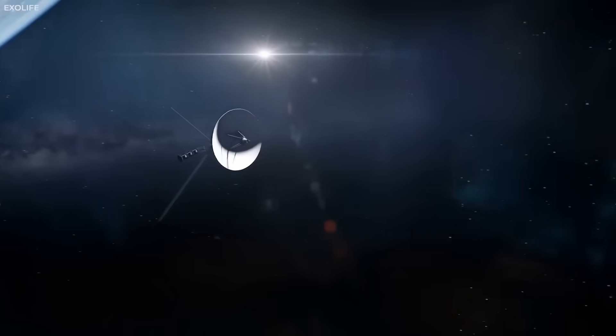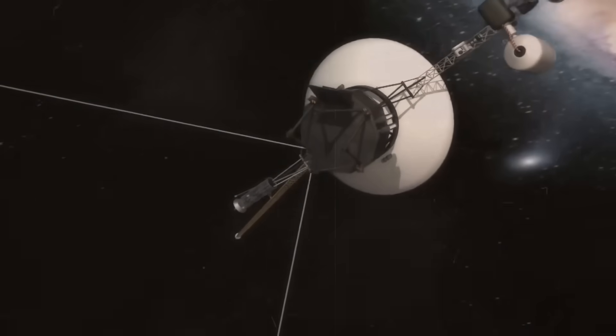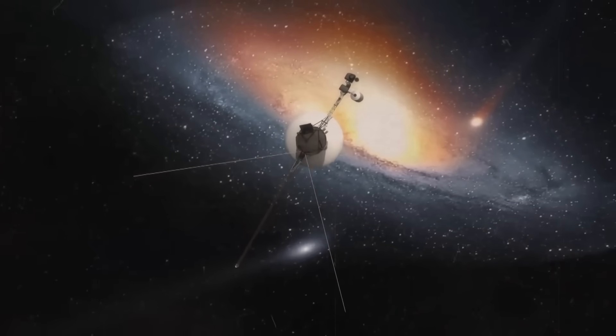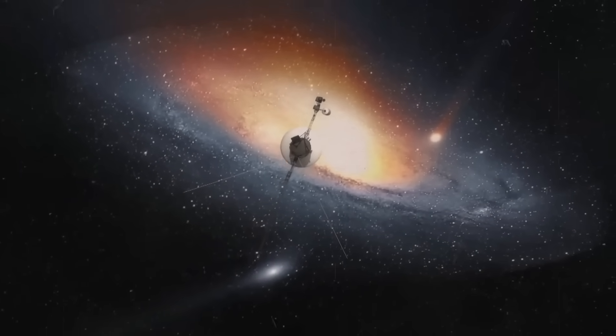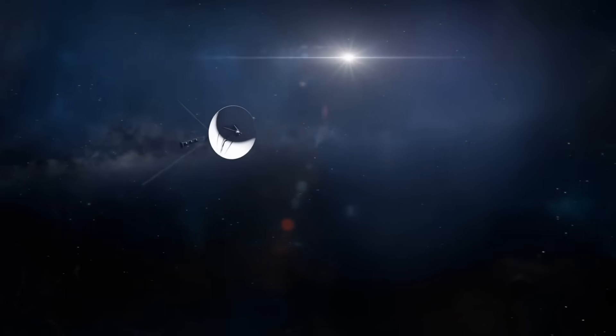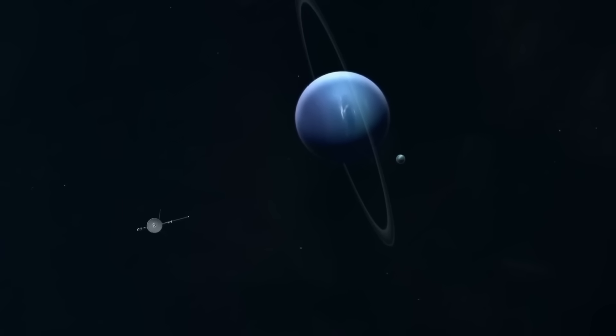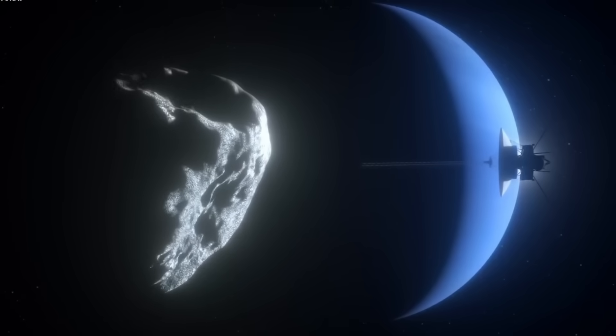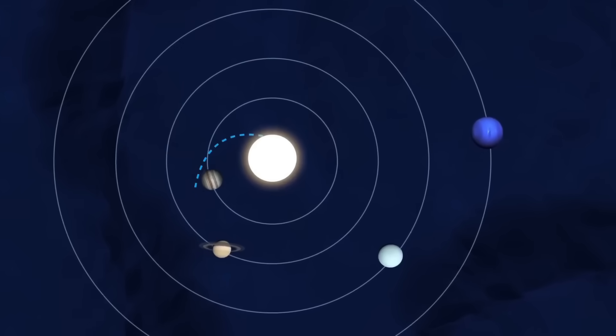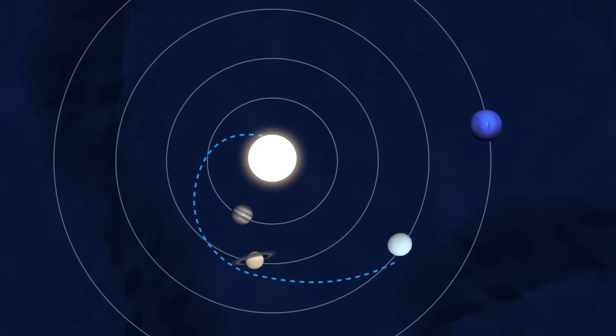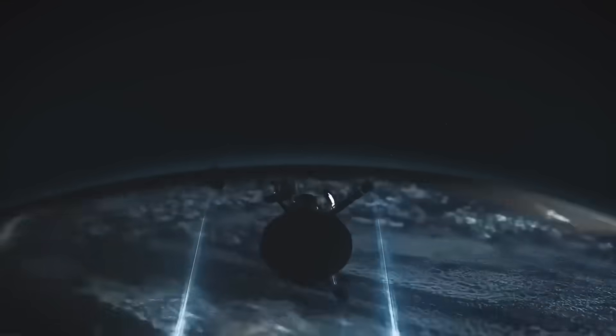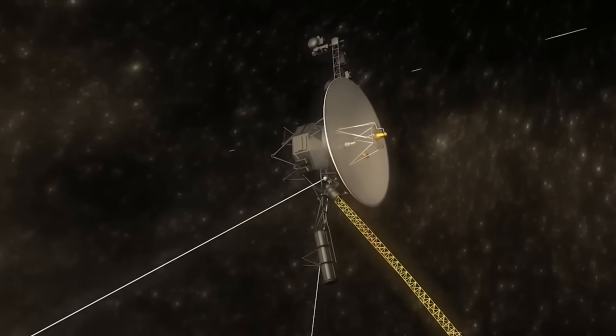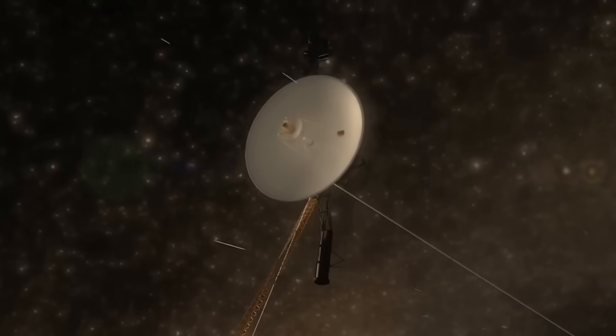Voyager 1 was the first probe to cross this protective bubble, despite years of speculation by scientists about its boundaries. Voyager 1 became the first artificial object to enter interstellar space in 2012 when it passed through the heliosphere's outermost region, known as the heliopause. Changes in particle measurements confirmed this historic event, an abrupt decrease in solar wind particles and a rise in extrasolar cosmic rays. Voyager 2 followed six years later with its still-operational plasma sensors, validating the previous findings and offering fresh perspectives on the nature of this boundary.